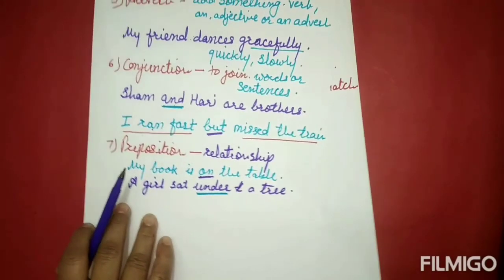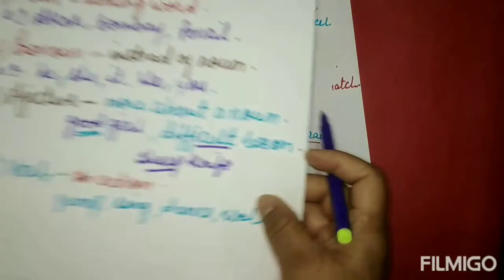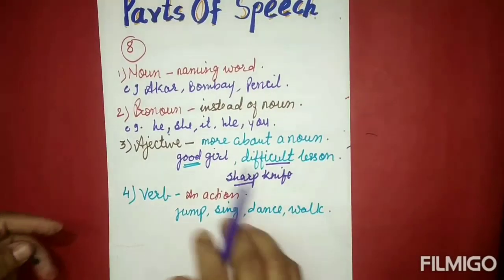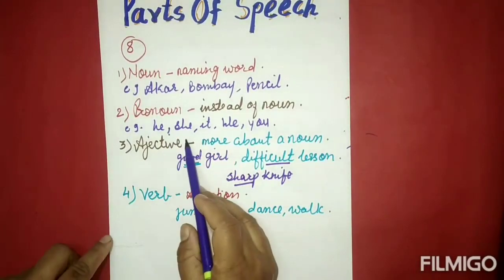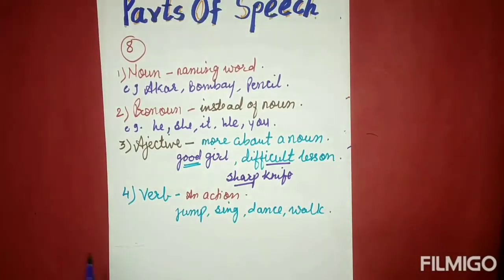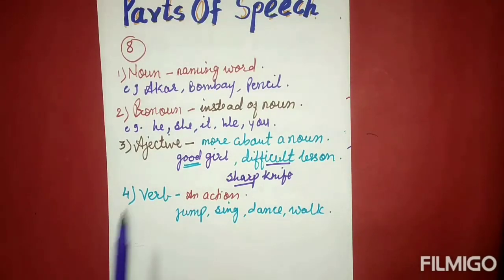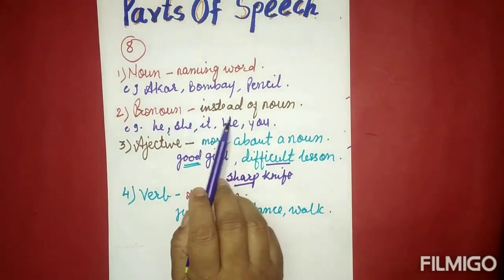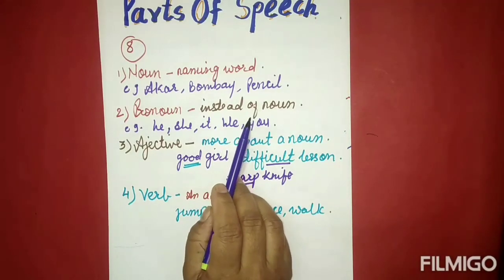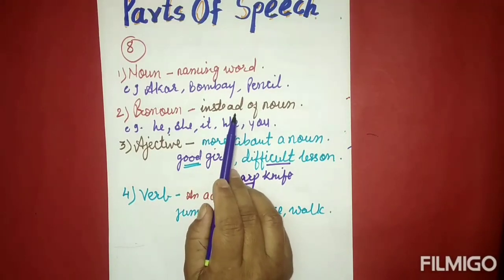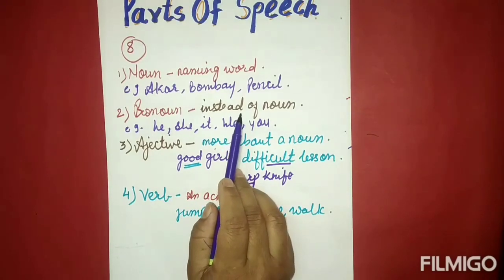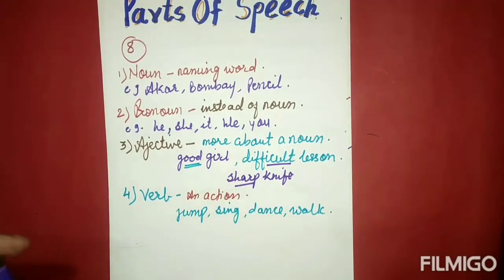So these all are the eight parts of speech: Noun, Pronoun, Verb, Adjective, Adverb, Conjunction, Preposition, and Interjection. I hope you will have learned the eight parts of speech from this video. Thank you.